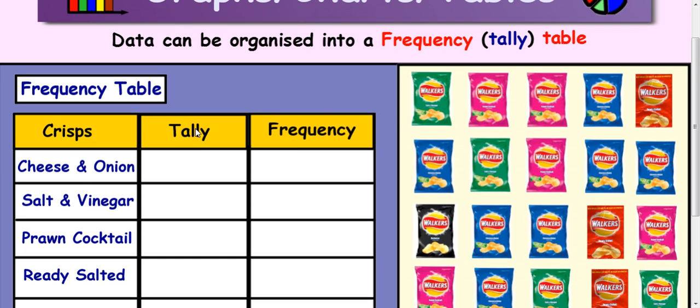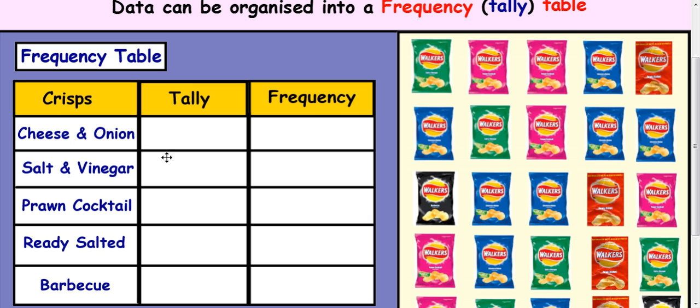So if you look at this idea here, I've created a quick frequency table with crisps. Now this would be used to record information that could be then used to create graphs and charts and things. So imagine I wanted to know in a classroom how many people like these flavors of crisps. So what I would do is I would ask how many people like cheese and onion and all the hands up I would create tally marks for and then I would record that as a frequency.